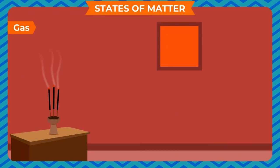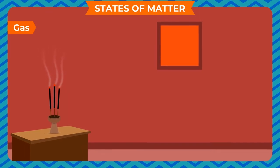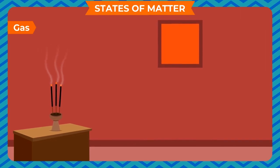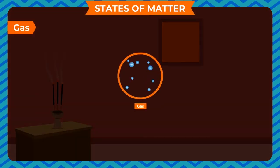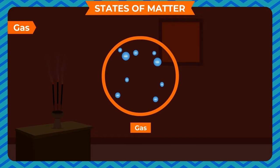If we light an agarbatti in one corner of a room, the fragrance of the agarbatti spreads quickly all over the room because the molecules of gas are quite loosely packed. They can move freely and can flow easily.